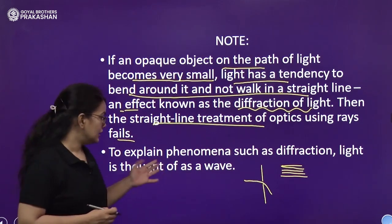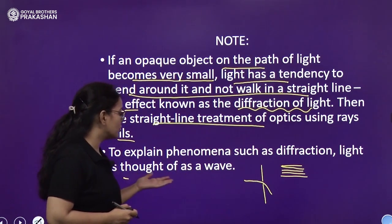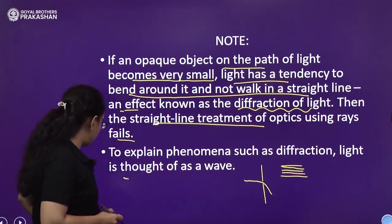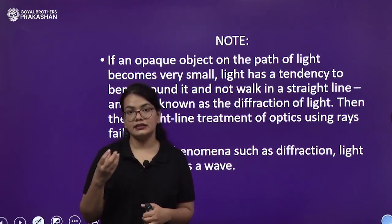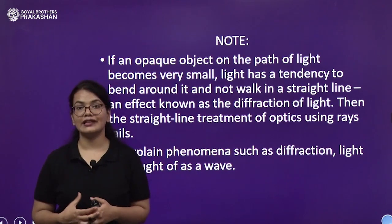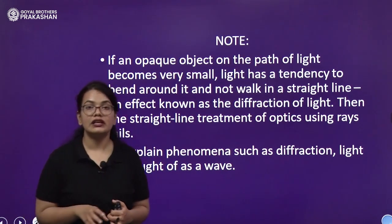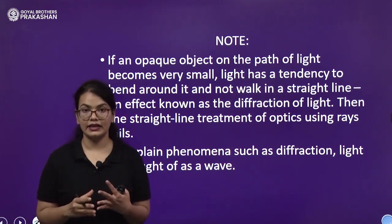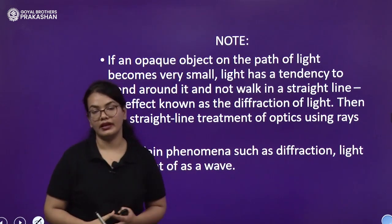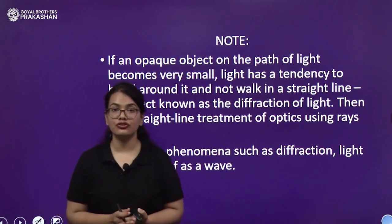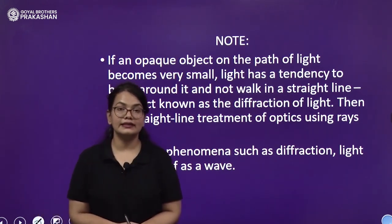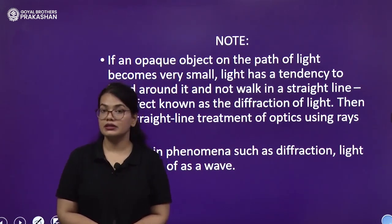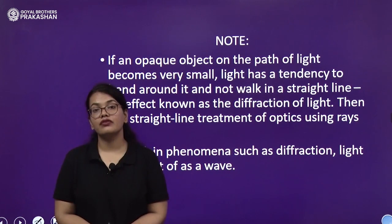To explain phenomena such as diffraction, light is thought of as a wave. Although this is not part of your syllabus, as additional information: there was extensive research to decide the nature of light. Initially Newton thought that light is made up of particles, and with the particle nature of light he explained phenomena such as reflection and refraction. However, when scientists developed special apparatus and discovered diffraction, interference, and polarization, these phenomena could not be explained by the particle nature of light.